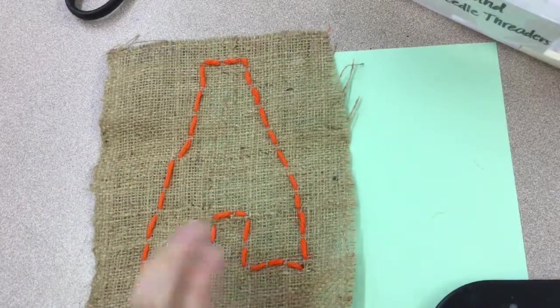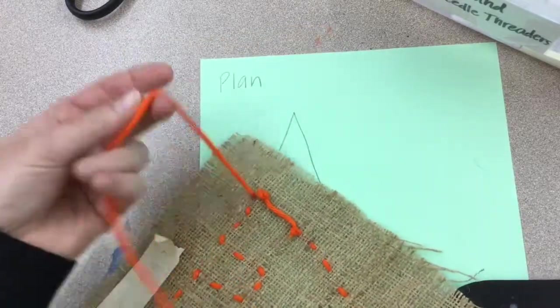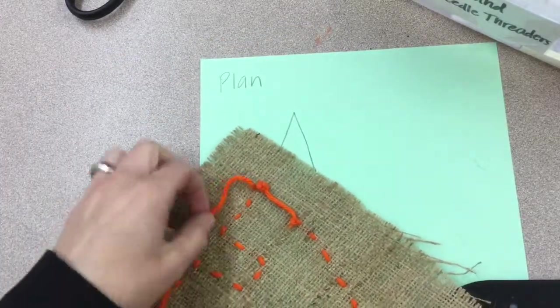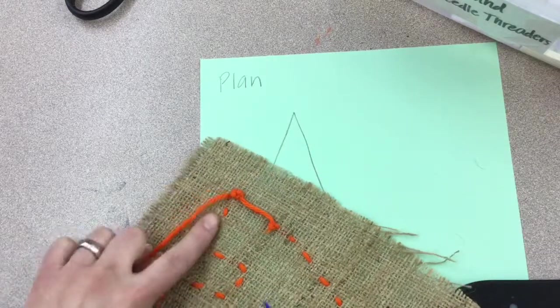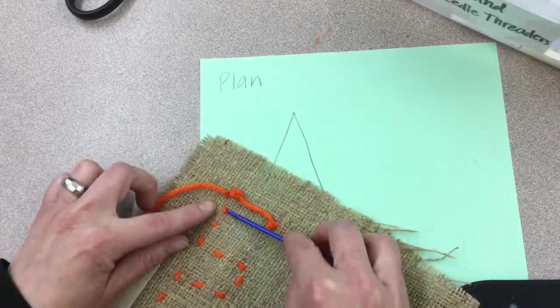When you reach the end of the color that you want to use, or maybe the end of your shape, make sure your yarn is on the back side where you started with the knot. So do one small stitch if you need to. Then you're going to find the closest stitch that you just did. So for me, it's this one. And I'm going to slide my needle through that stitch.